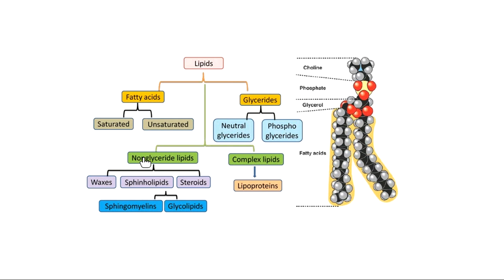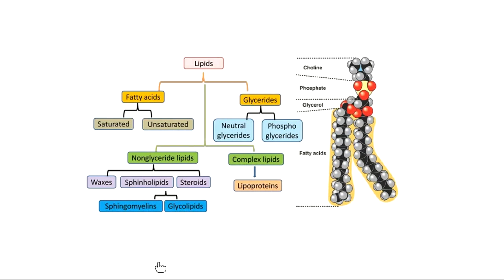Non-glycerol lipids consist of waxes, sphingolipids, and steroids. Sphingolipids are again divided into sphingomyelin and glycolipids. Complex lipids consist of lipoproteins. This is the general classification of lipids. We are not going to study all of these in detail — most important parts will be covered and some will be omitted.